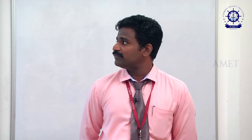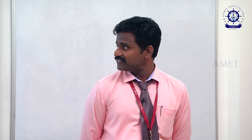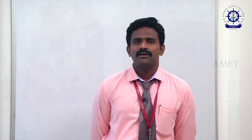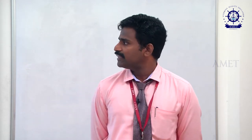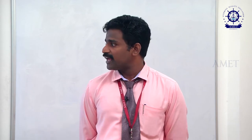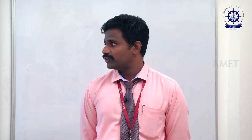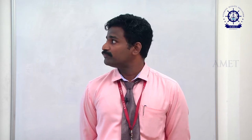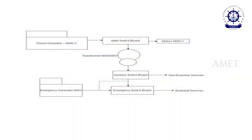Non-essential services include things like air conditioning fans. From the main switchboard, the supply also goes directly to the emergency switchboard. There is an interlock between the main switchboard and the emergency switchboard. There is also another source — from the emergency generator — connected to the emergency switchboard.